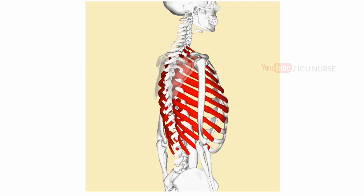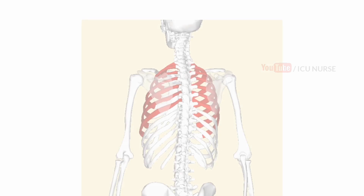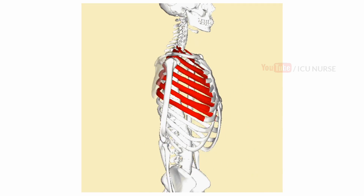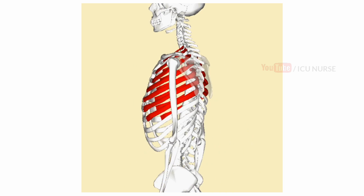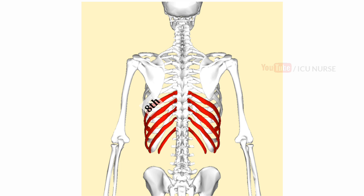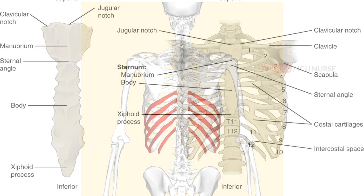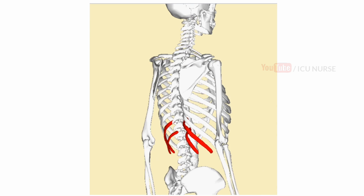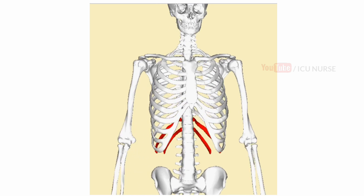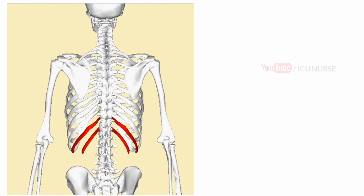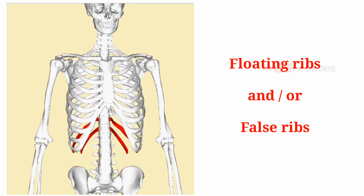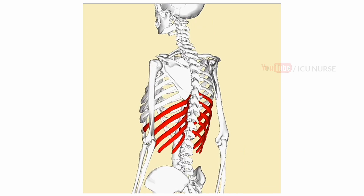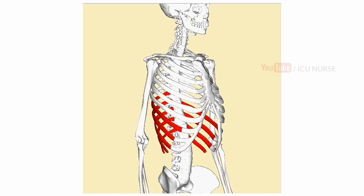In humans, there are normally 12 pairs of ribs. The first 7 pairs are attached directly to the sternum by the costal cartilages and are called true ribs. The 8th, 9th, and 10th pairs do not join the sternum directly but are connected to the 7th rib by cartilage — hence they are called false ribs. The 11th and 12th pairs are attached only to the vertebrae and do not attach to the sternum at all, hence they are called floating ribs and/or false ribs. To conclude, the human ribcage has 5 pairs of false ribs.